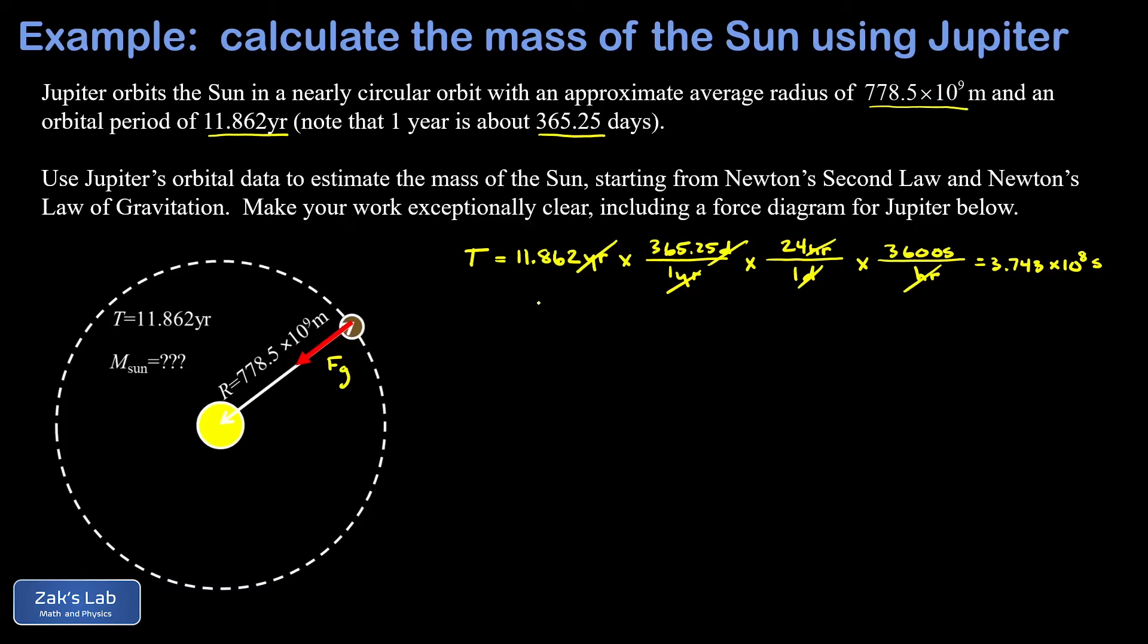We apply Newton's Second Law, F net equals ma. The mass I'm referring to here is the mass of Jupiter, so the net force on it results in that centripetal acceleration. How do I figure out the size of that gravitational force? That's where Newton's Law of Gravitation comes in. That's given by big G the constant times the product of the two masses.